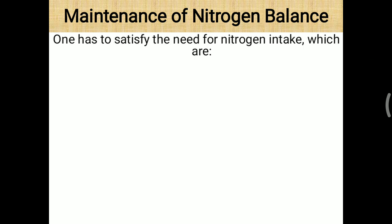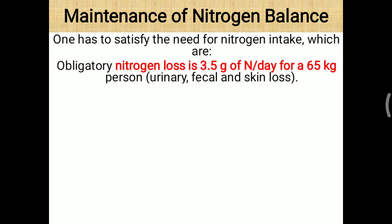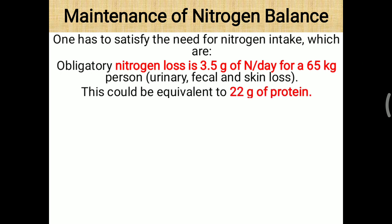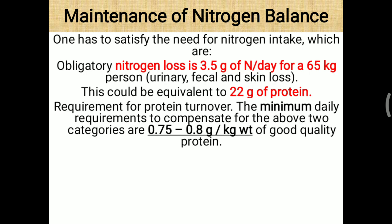For maintenance, one has to satisfy the obligatory nitrogen loss. On a daily basis, nitrogen loss is about 3.5 grams. For a 65 kg person, the urinary, fecal, and skin loss could be equivalent to 22 grams of protein, since nitrogen is just 16% of total protein. The minimum daily requirement to compensate for both known and unknown losses should be 0.75 to 0.8 gram per kilogram body weight of good quality protein.